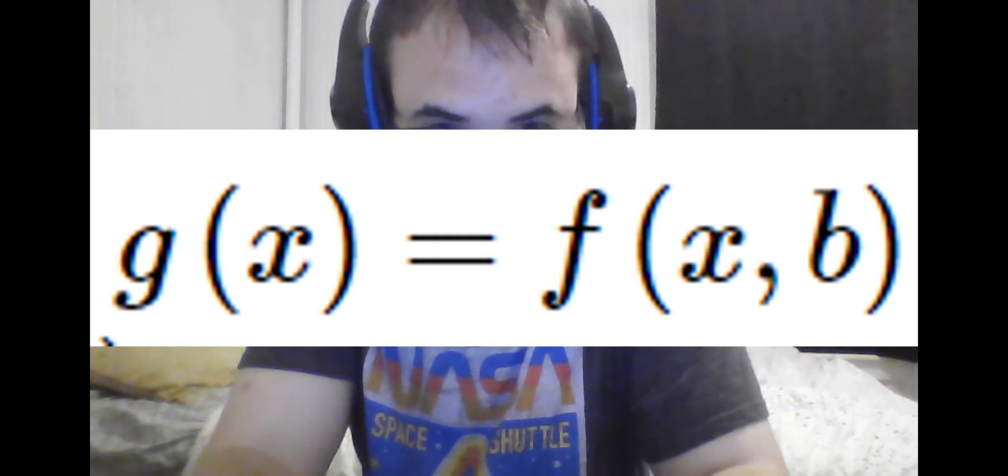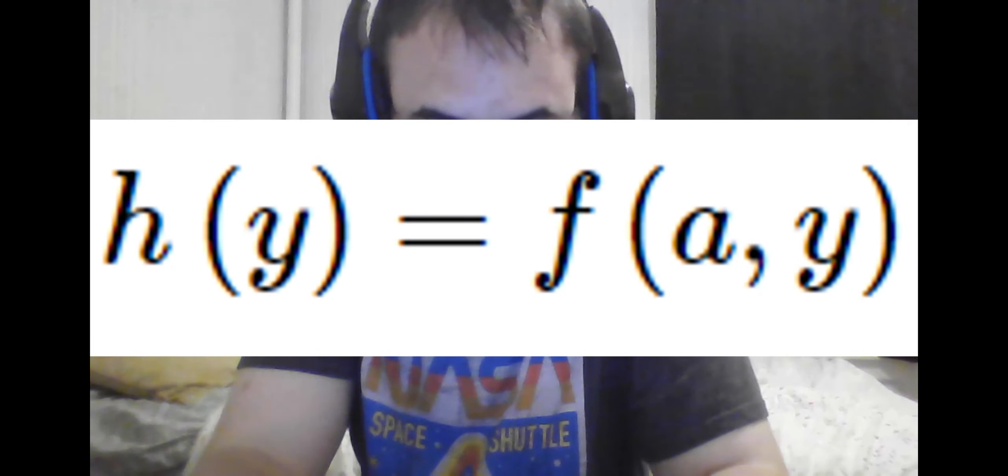If we do the same thought process, but use h instead, to make it obvious that we are using a different single variable function now in terms of y, we see that we get the same exact result, namely that the derivative of h(y) equals 0 at the critical point, and the partial derivative with respect to y also equals 0.